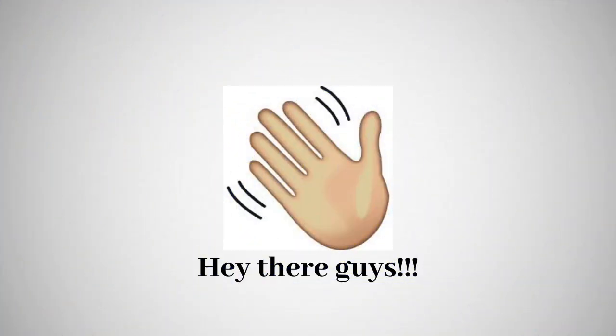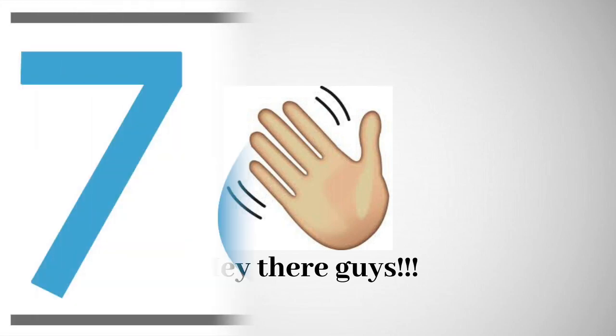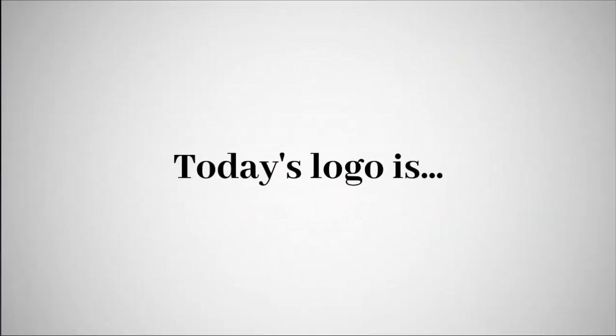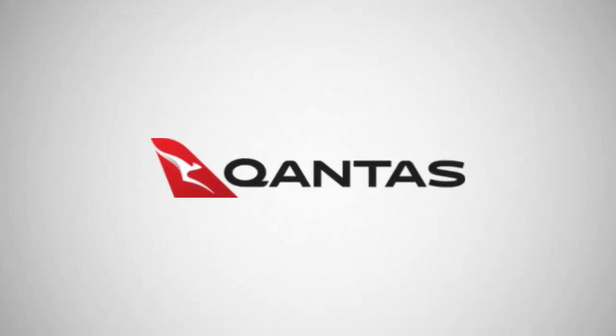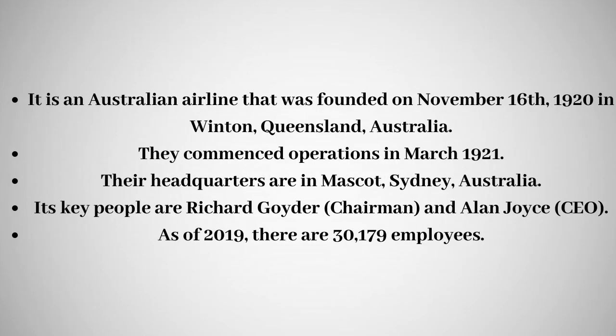Hey there guys, Robert here, and welcome to episode 767 of Logo History. For this episode we're going to have a look at Qantas. It is an Australian airline that was founded on November 16th, 1920, in Winton, Queensland, Australia. They commenced operations in March 1921. Their headquarters are in Mascot, Sydney, Australia.